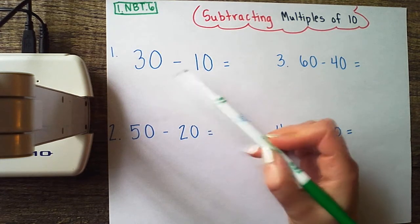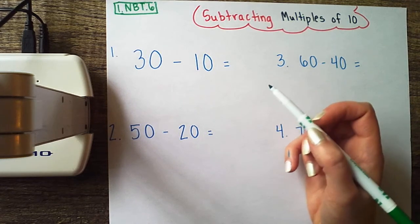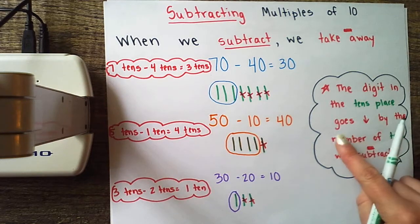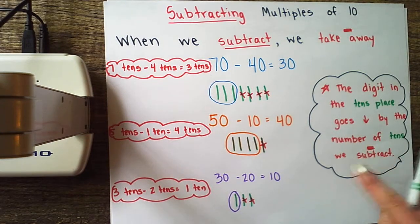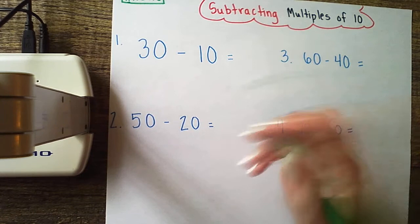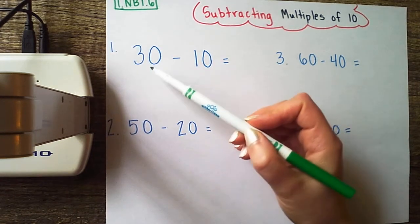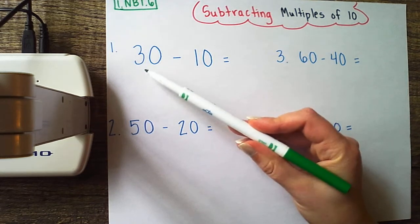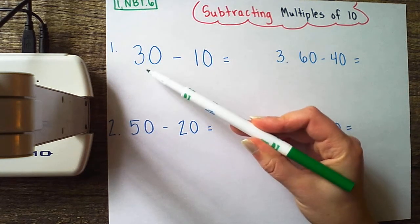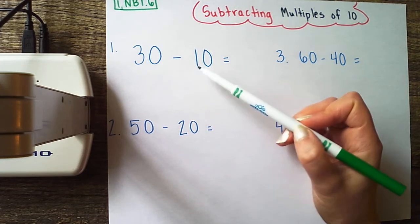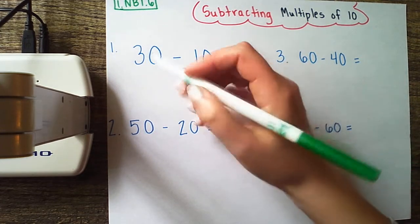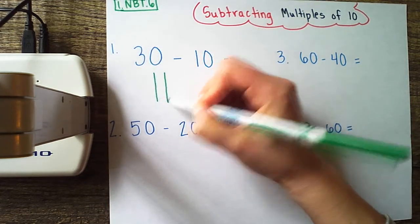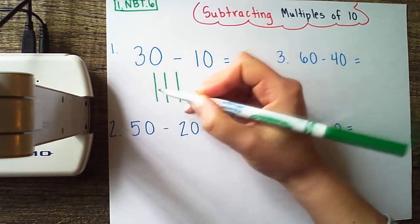For my first problem, I'm taking 30 and subtracting 10 away. 30 minus 10 equals what? I'm going to draw a picture and see if it's true that the digit in the tens place goes down by the number of tens we subtract. If that's true, then 3 minus 1 is 2, so 3 tens minus 1 ten should be 2 tens. Let's see. I'm starting with 30, represented with 3 tens: 1, 2, 3 tens - 10, 20, 30.